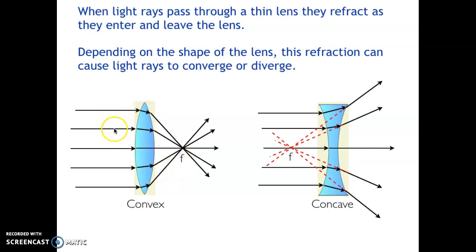This point where parallel incident light rays come together and meet for the convex lens is called the focal point, and we label that F in a diagram.